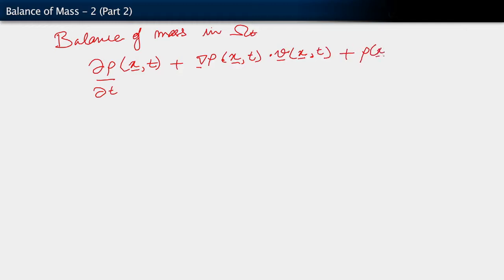So our balance of mass written in terms of purely spatial quantities is this. We have partial time derivative of rho, and this is a proper partial time derivative where we are only differentiating with respect to t. We have our convective term. Let me make this explicitly a function of little x and t dotted with the spatial velocity, which is a function of little x and t. Plus rho function of little x and t, trace of this quantity which is also a function of little x and t equals zero.